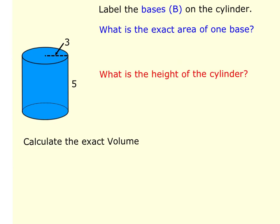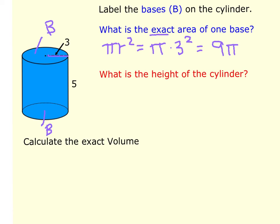Now we're looking at an example of a cylinder. The bases are the circles — the top circle and the bottom circle. Because the base is a circle, the area is pi r squared. Looking at the picture, the radius is 3, so pi times 3 squared gives us 9 pi. The problem wants an exact answer, so we leave it as 9 pi.